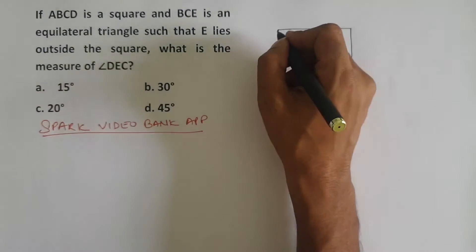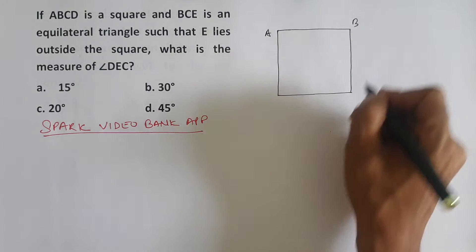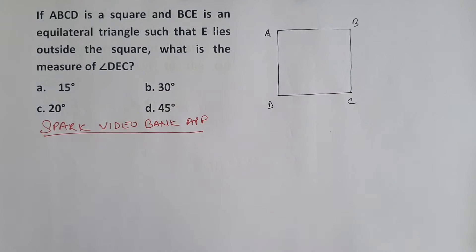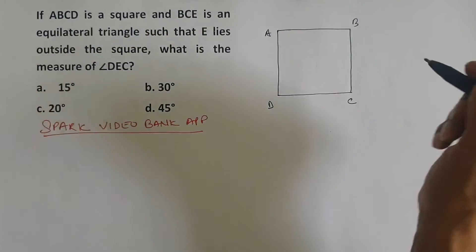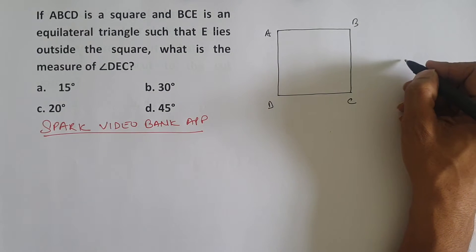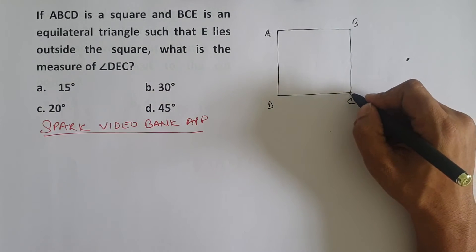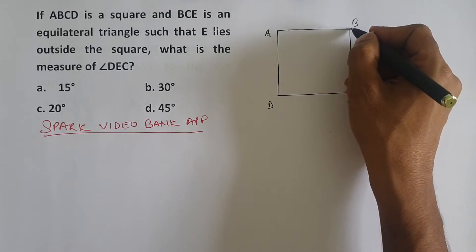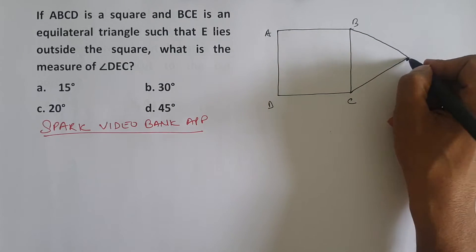So this is a square ABCD. E is a point such that BCE is an equilateral triangle. So here is point E, and BCE is an equilateral triangle.